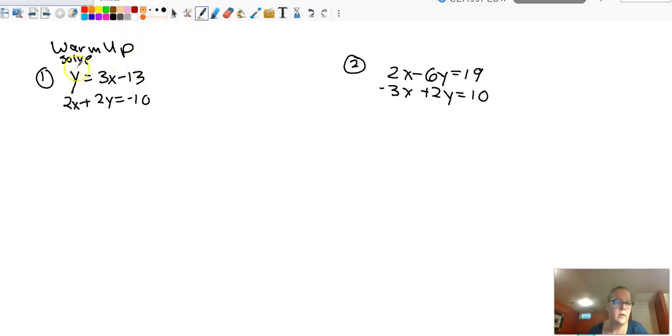All right, so this first one is already solved for a variable, so we're going to do this by substitution. So I'm going to take this y and this equation here and replace it with the expression for y, which is 3x minus 13. Again, this is exactly what we did back in Algebra 1. It doesn't change. It's just a matter of reminding yourself that you remember it.